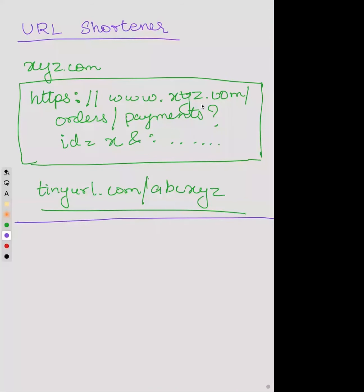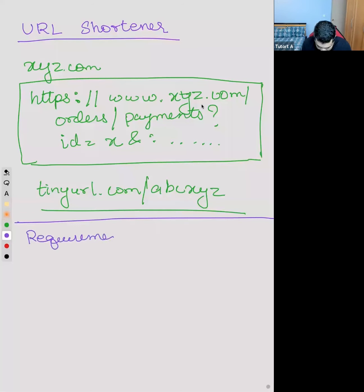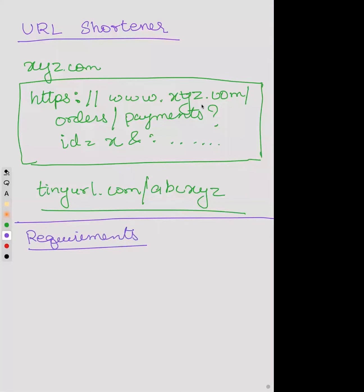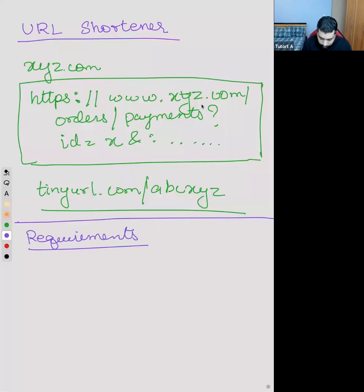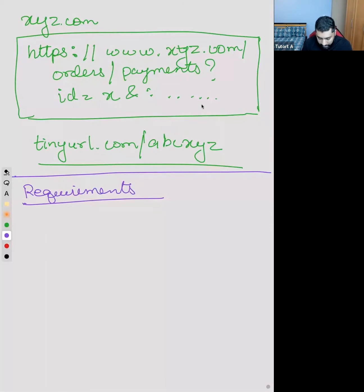First of all, we should try to find out the exact requirements - what features it should support. Functional and non-functional requirements. Exactly. So let's try to do this. We have requirements - let's focus on the functional requirement bit. Can somebody tell me what would be the functional requirements for this particular use case?